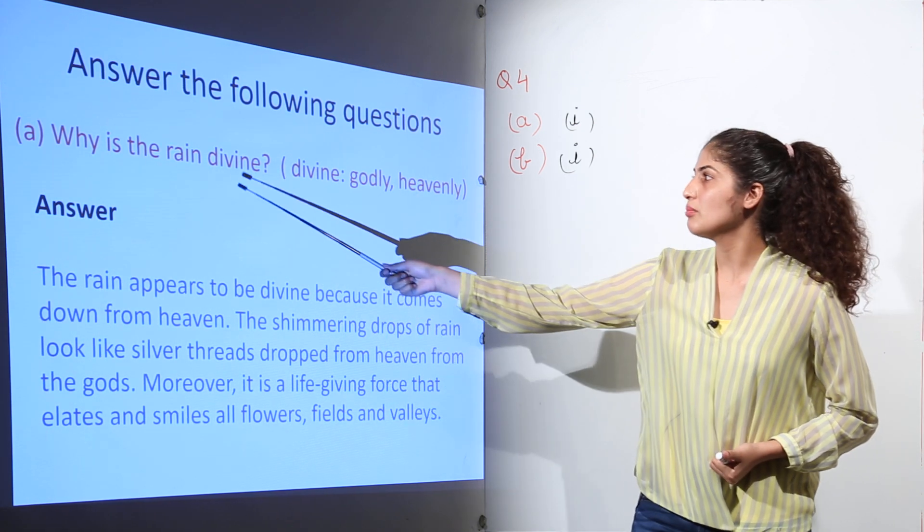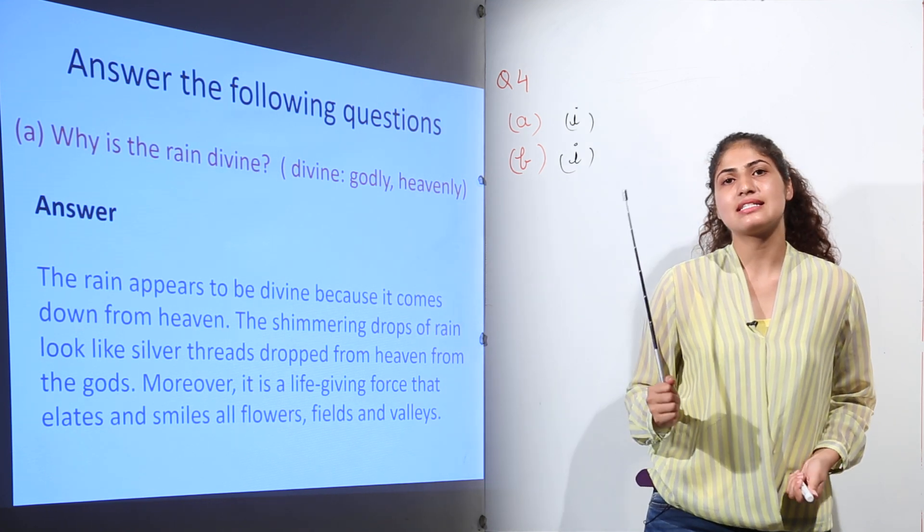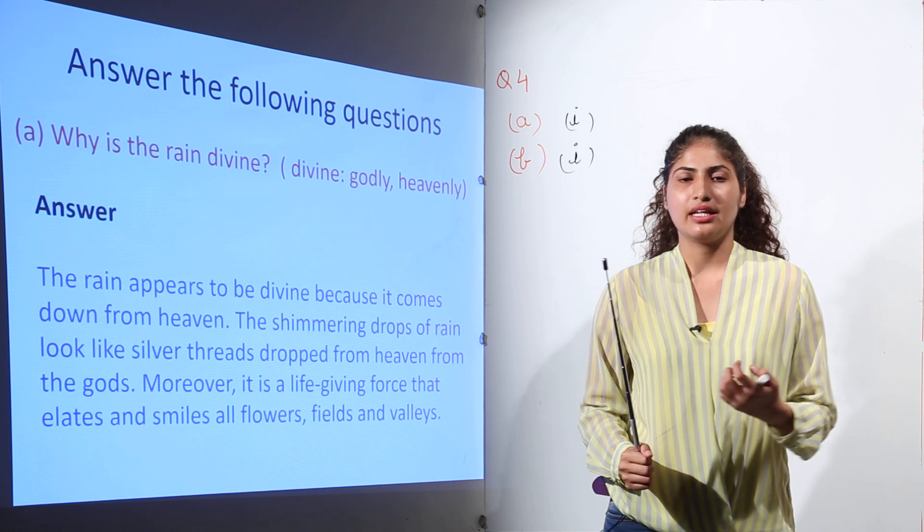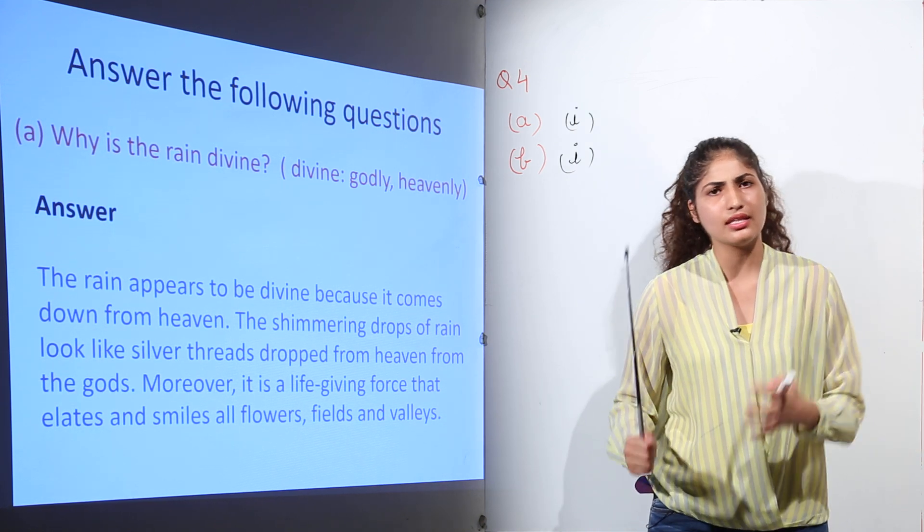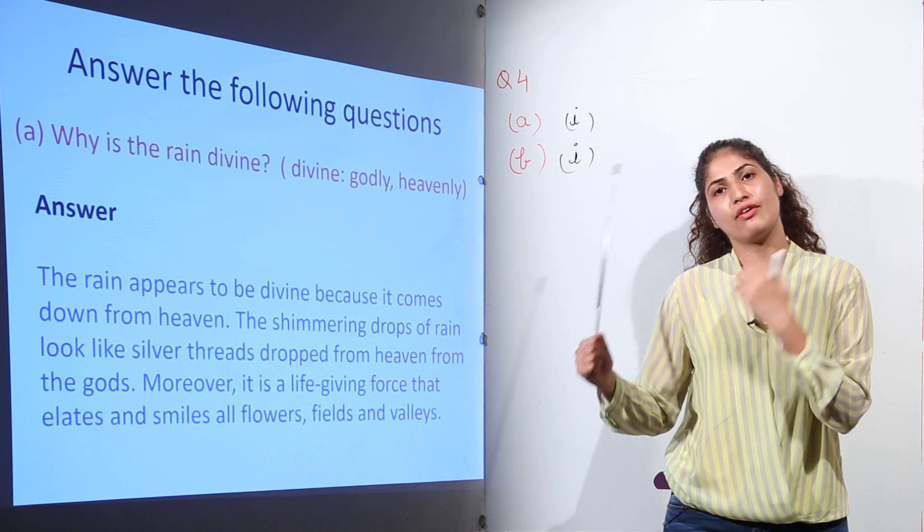Next question is why is the rain divine? Now let us understand the meaning of the word divine. Divine refers to the godly or heavenly. The rain is termed as divine because we believe that every phenomenon, anything that occurs on the earth, there is God behind every phenomenon.